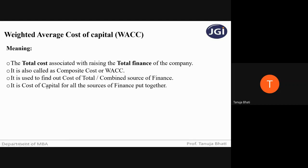WACC is the cost of capital for all the sources of finance put together. Suppose the company has raised finance through four means — equity, preference, debentures, and term loans. To calculate WACC, you consider all four sources of finance combined in order to calculate your weighted average cost of capital.